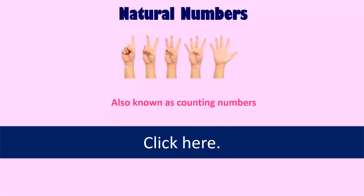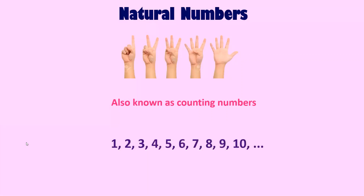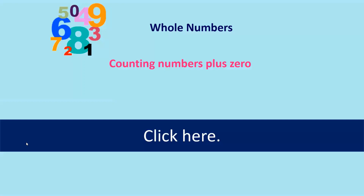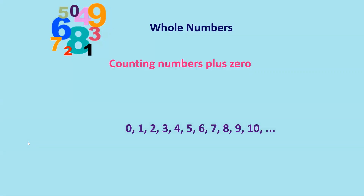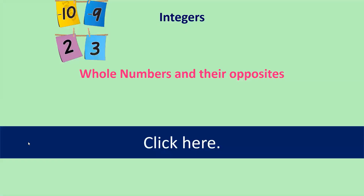Natural numbers, also known as counting numbers. Whole numbers are counting numbers plus zero. Integers are whole numbers and their opposites.